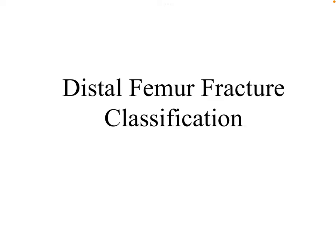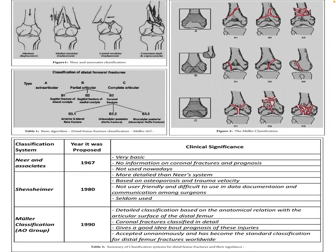In this video we will discuss the classification of the distal femur fracture. We have one very important classification by the name of AO Müller classification, which is most commonly used, although in the past we had many classifications. This is the AO Müller classification.